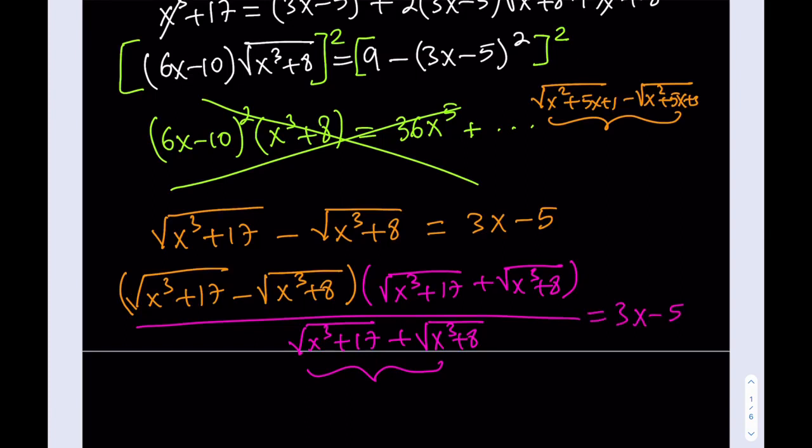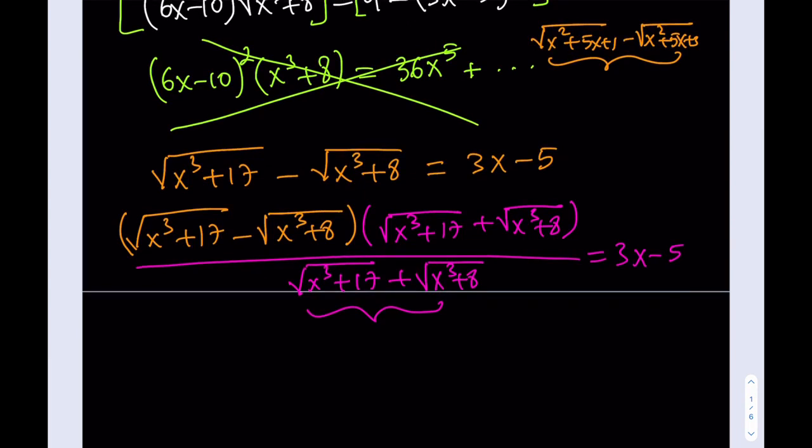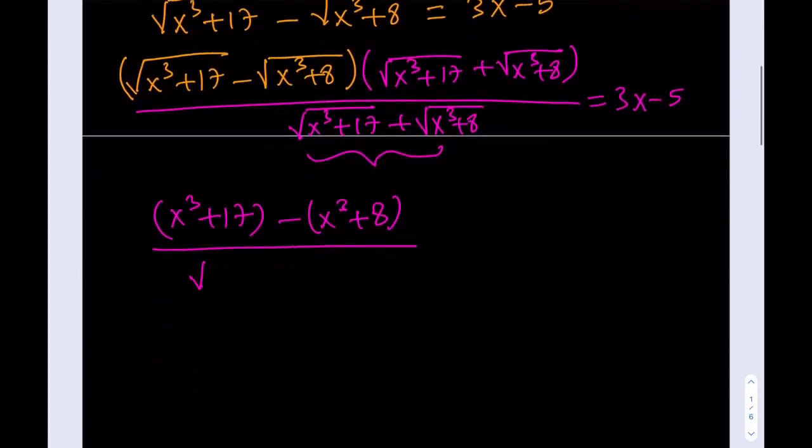Now, one concern here might be that could we be dividing by zero? And I can tell you that we're not. Because this expression here is not going to be zero. So, now we're good. This is still equal to 3x minus 5 because we multiplied and divided. Now, what am I going to do next? What I'm going to do is actually simplify this. There is a reason why we multiply by conjugates. Why do we do that? Because we get difference of two squares.